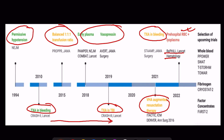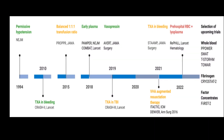Combat was negative in the primary outcome, but when data were combined with PAMPR, early plasma was associated with improved survival when transfer times exceeded 20 minutes. A selection of upcoming trials is reported on the far right. These upcoming trials are investigating whole blood compared to blood components, the early supplementation of fibrinogen, or the use of factor concentrates to correct trauma-induced coagulopathy.